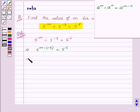Or, we get 5 to the power m plus 3 is equal to 5 to the power 5. Now, on both sides, powers have same base that is 5. So, that means their exponents will also be equal.